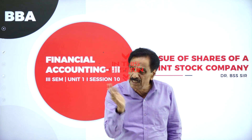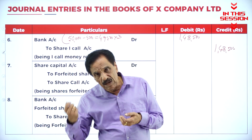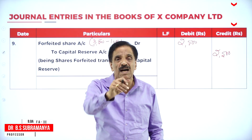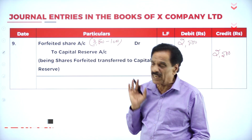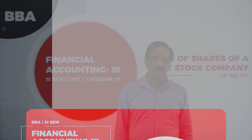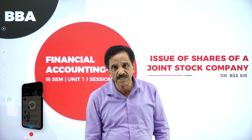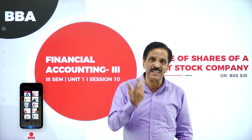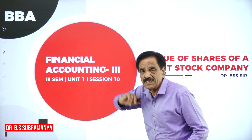Hello my dear students, I am Dr. B.S. Brahmania, professor in Commerce and Management at Vidyashram First Trade College, a temple of excellence, Mysuru. Joint stock company is an artificial person created by law. Once any applicant pays the premium, then on failure, don't take the premium into consideration — that is the law.